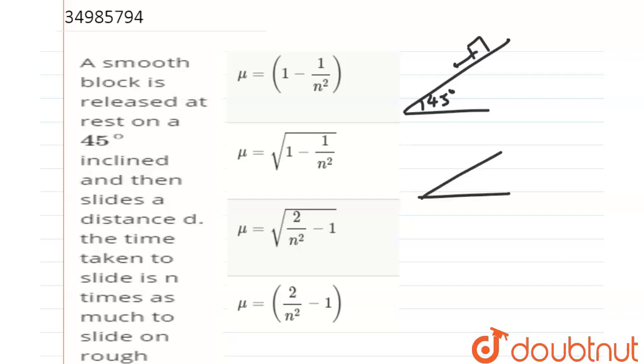When friction is present, the force of friction acts in addition to gravity. So here we have a friction force, and acceleration due to gravity acts in the downward direction along the incline.